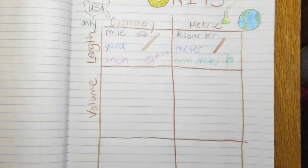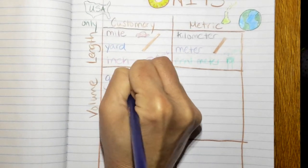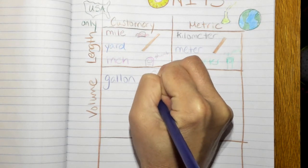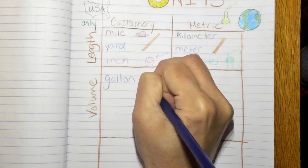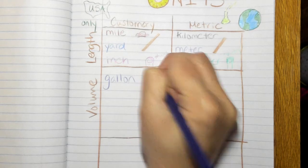For customary we have a gallon. And a gallon is like a milk jug which is really hard to draw but I'm going to do my best. So that would be like a milk jug.